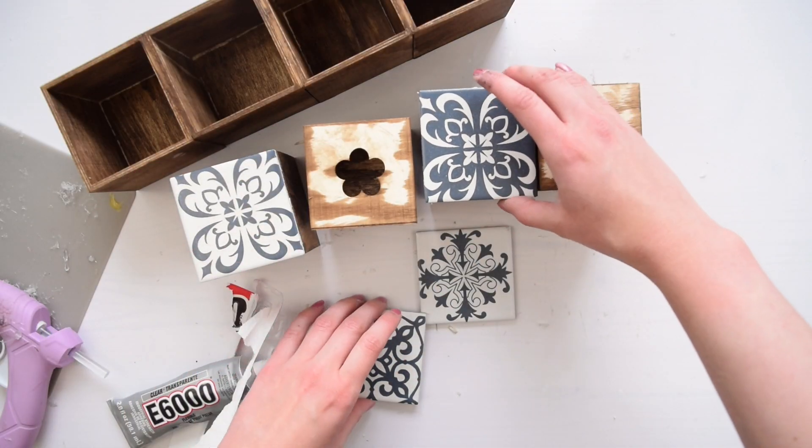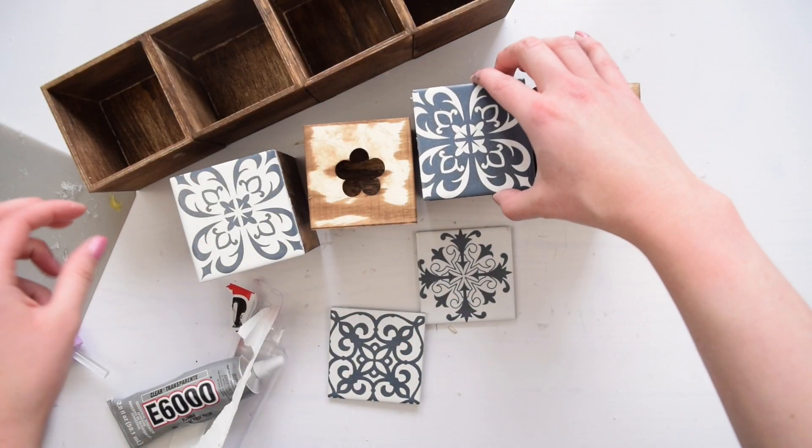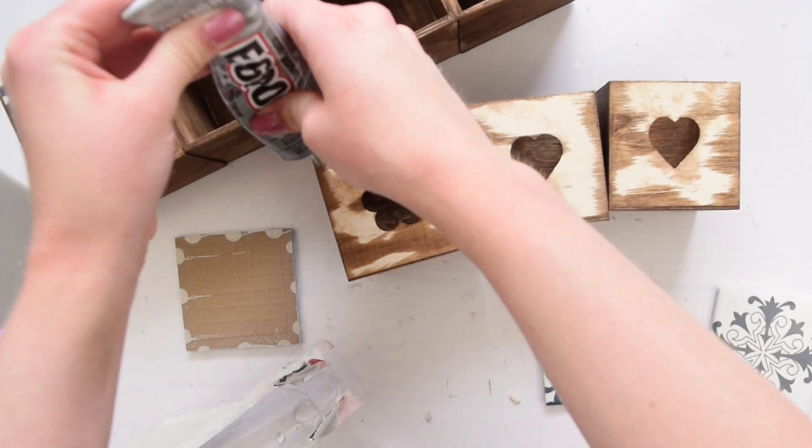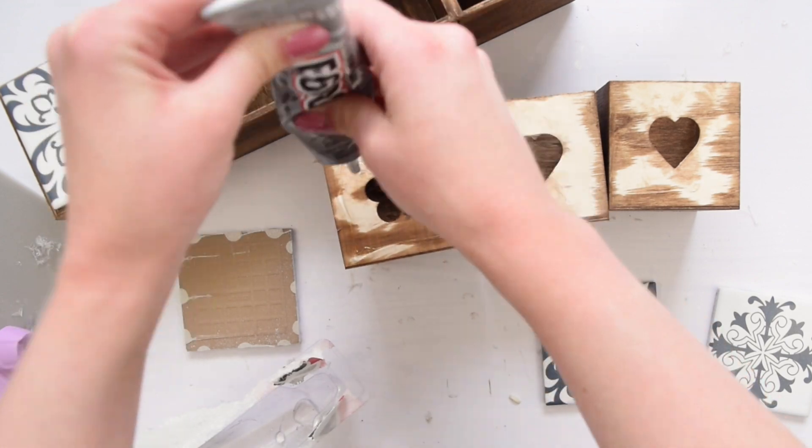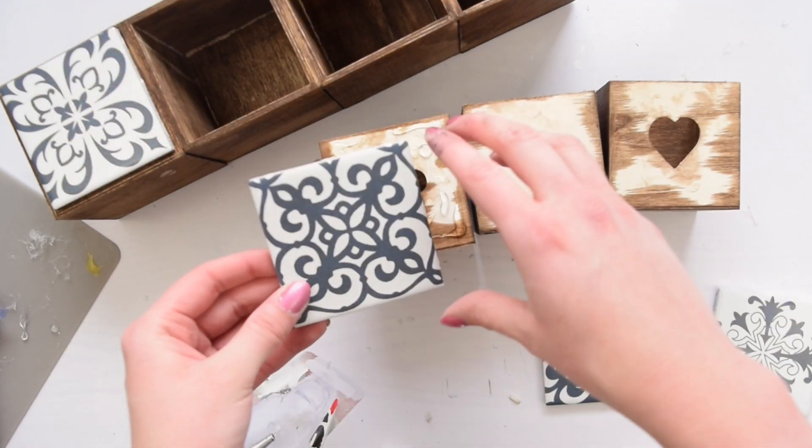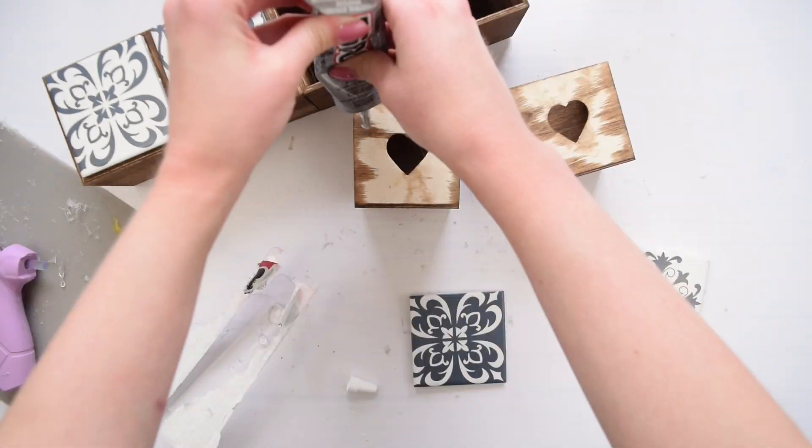What's great about these tiles is they are the perfect size for the front of these drawers. Like it is like they're meant to be. So I figured out my arrangement of the tiles and then I used a combination of E6000 glue and hot glue to attach them all to the front of these cubes.